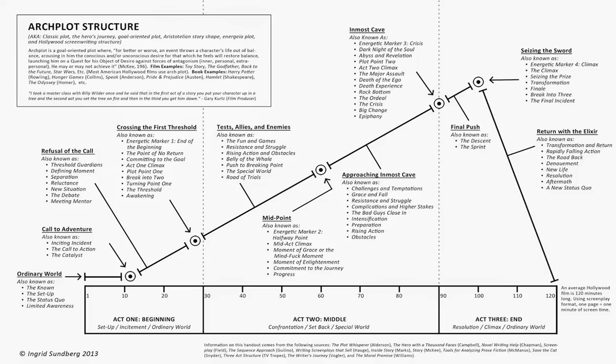This part here is 50% of the novel, so this 25% is just — it could be fun and games, resistance and struggle, action and obstacles. There's so many things that could go in here. And same with the second 25% — it could be the dark night of the soul, the abyss and revelation. There's just so many things. It's not really clear what you actually put in your novel. It's also confusing because there's so many different terms and plans and strategies.